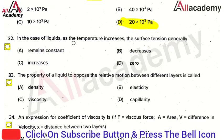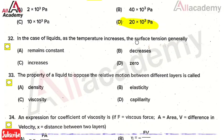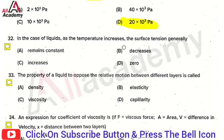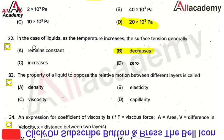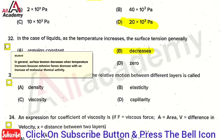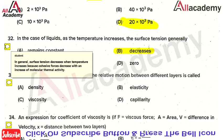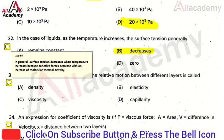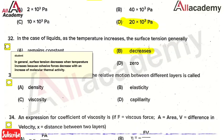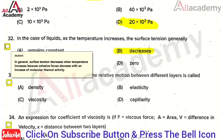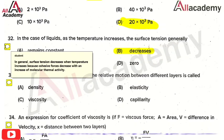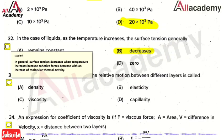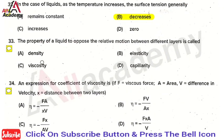The next question: in liquids, when temperature increases, surface tension generally — the right answer is option 2, that is decreases. In general, surface tension decreases when temperature increases because the cohesive force decreases with an increase in molecular thermal activity. So there is a decrease in surface tension when there is an increase in temperature.